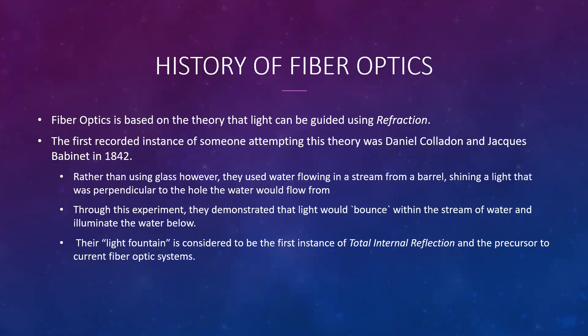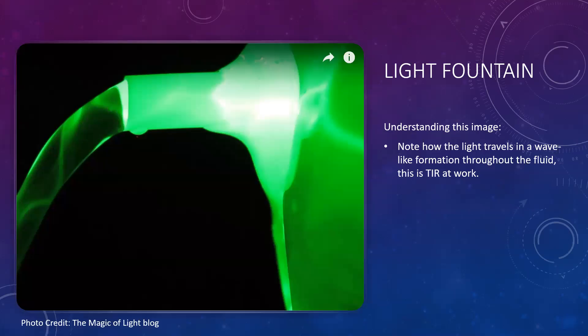It was showing the stream of water being illuminated, and the light would also go into the bucket below. They called this their 'light fountain,' which was considered to be the first instance of total internal reflection and a precursor to the current fiber optic systems used today. This is an example of a light fountain, although not the exact one they used.